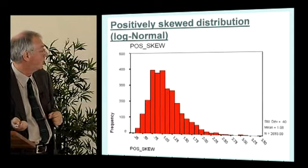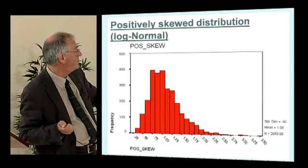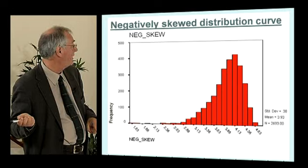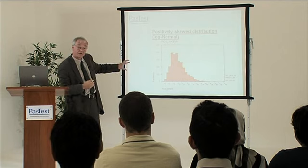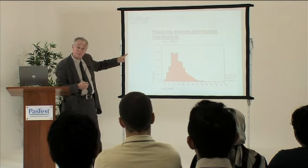Data isn't always normal. Sometimes you have data which is called positively skewed, and sometimes data can be negatively skewed. Positively skewed data is called that because the data is pulled out in a positive direction — as we go from left to right, numbers increase, so if the asymmetry is pulled in a positive direction, that's positive skewness. This is often found to have what's called a log-normal distribution. Whereas if the skewness goes the other way with data pulled in a negative direction, that's a negatively skewed distribution.